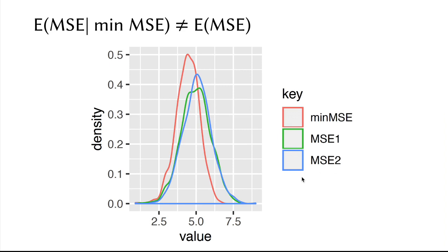So if we have to plot the distribution of mean squared errors of the first model, green line, or the second, we would not be able to discern between the two. But the distribution of mean squared errors of the minimum between the two would have lower mean. So the distribution will be shifted to the left.